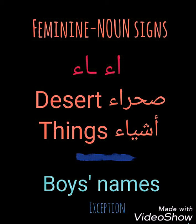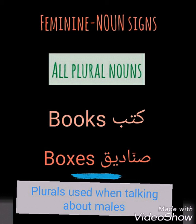The next sign is the elongated Alif, as in Sahara and Ashiya. The exception again is boys' names ending with the elongated Alif.